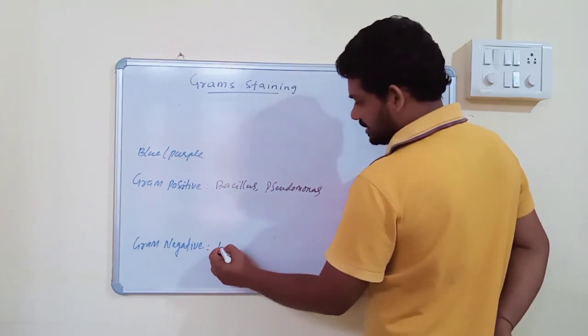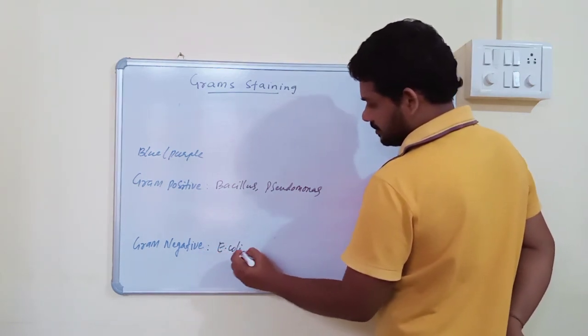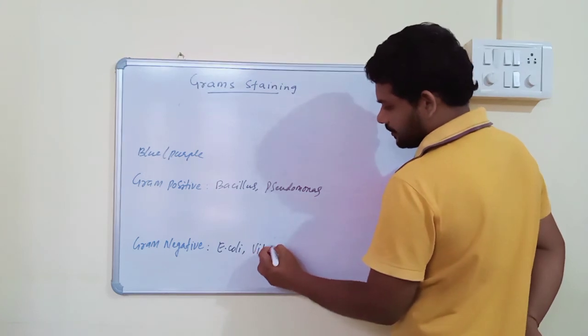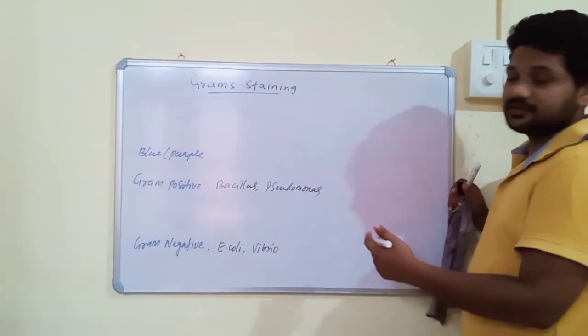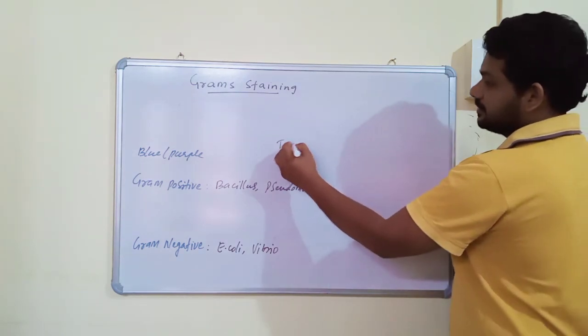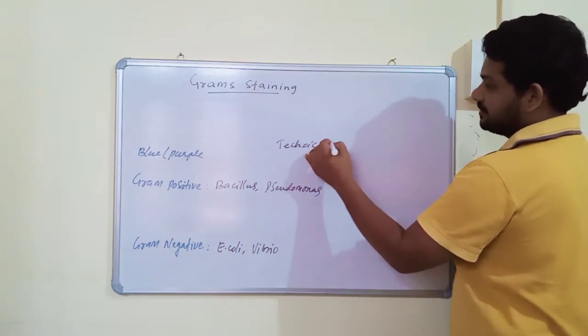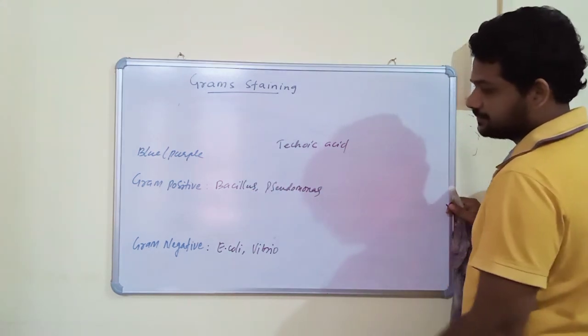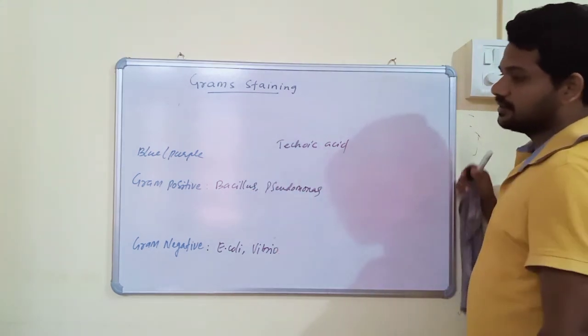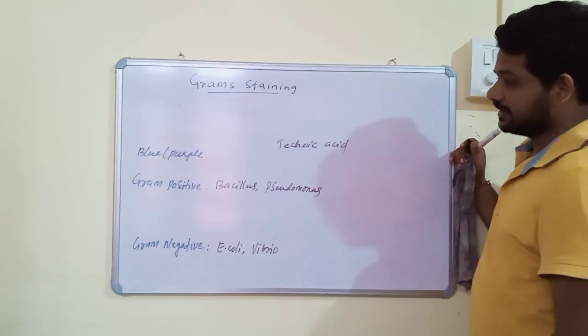Next, Escherichia coli, Vibrio cholerae are some of the Gram negative bacteria. And what is the main difference between Gram positive and Gram negative? Teichoic acid is present on cell wall of Gram positive bacteria but absent on cell wall of Gram negative bacteria.